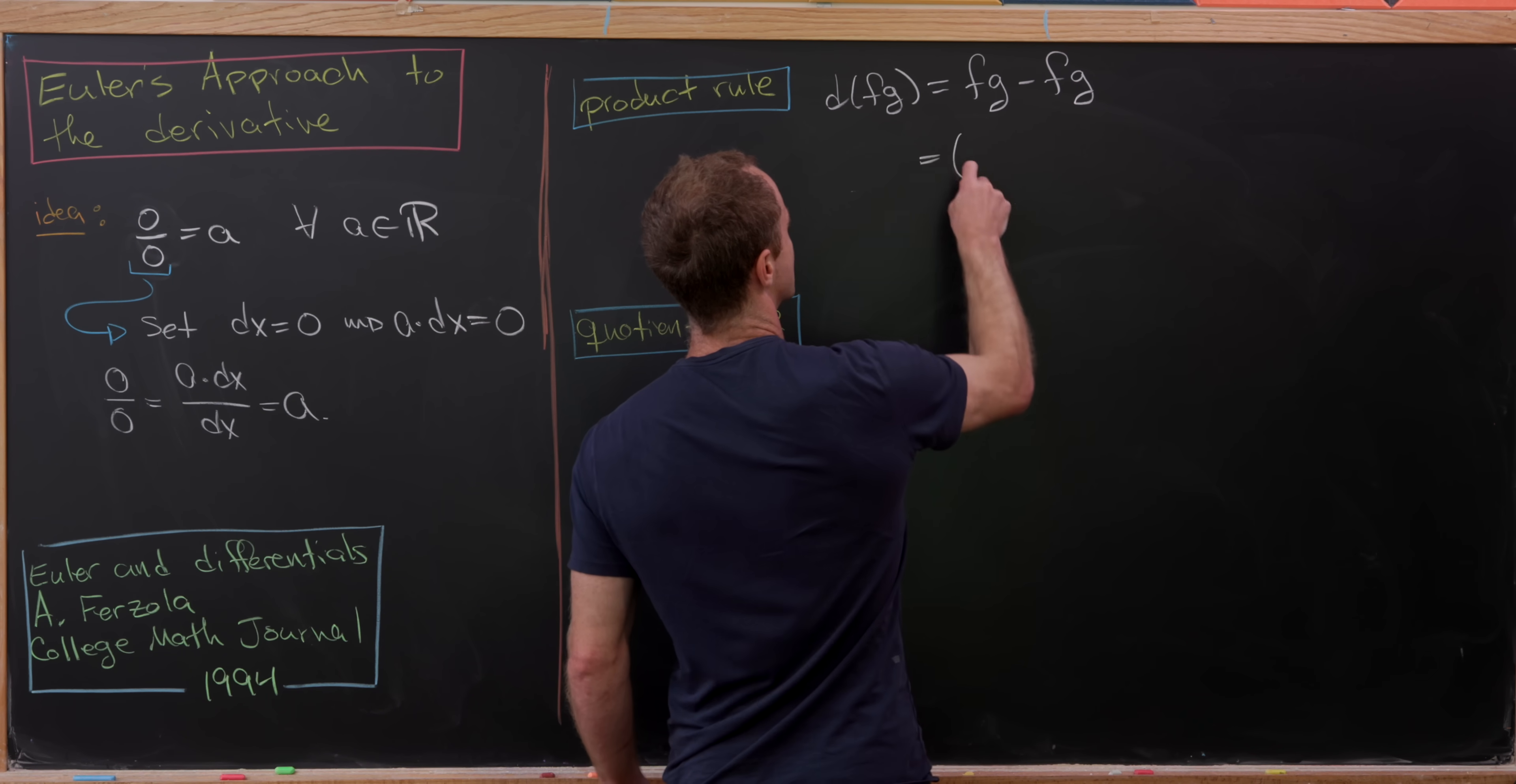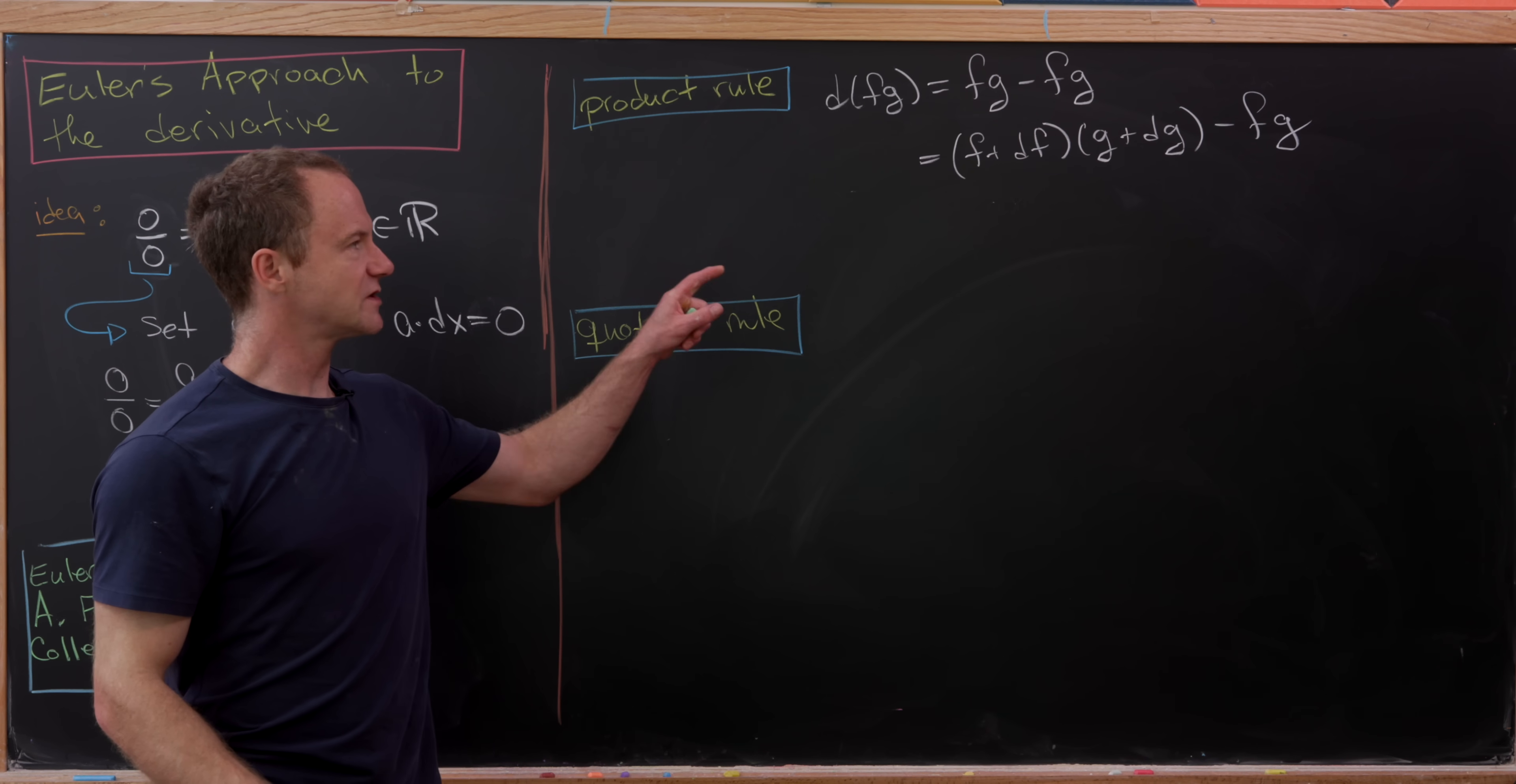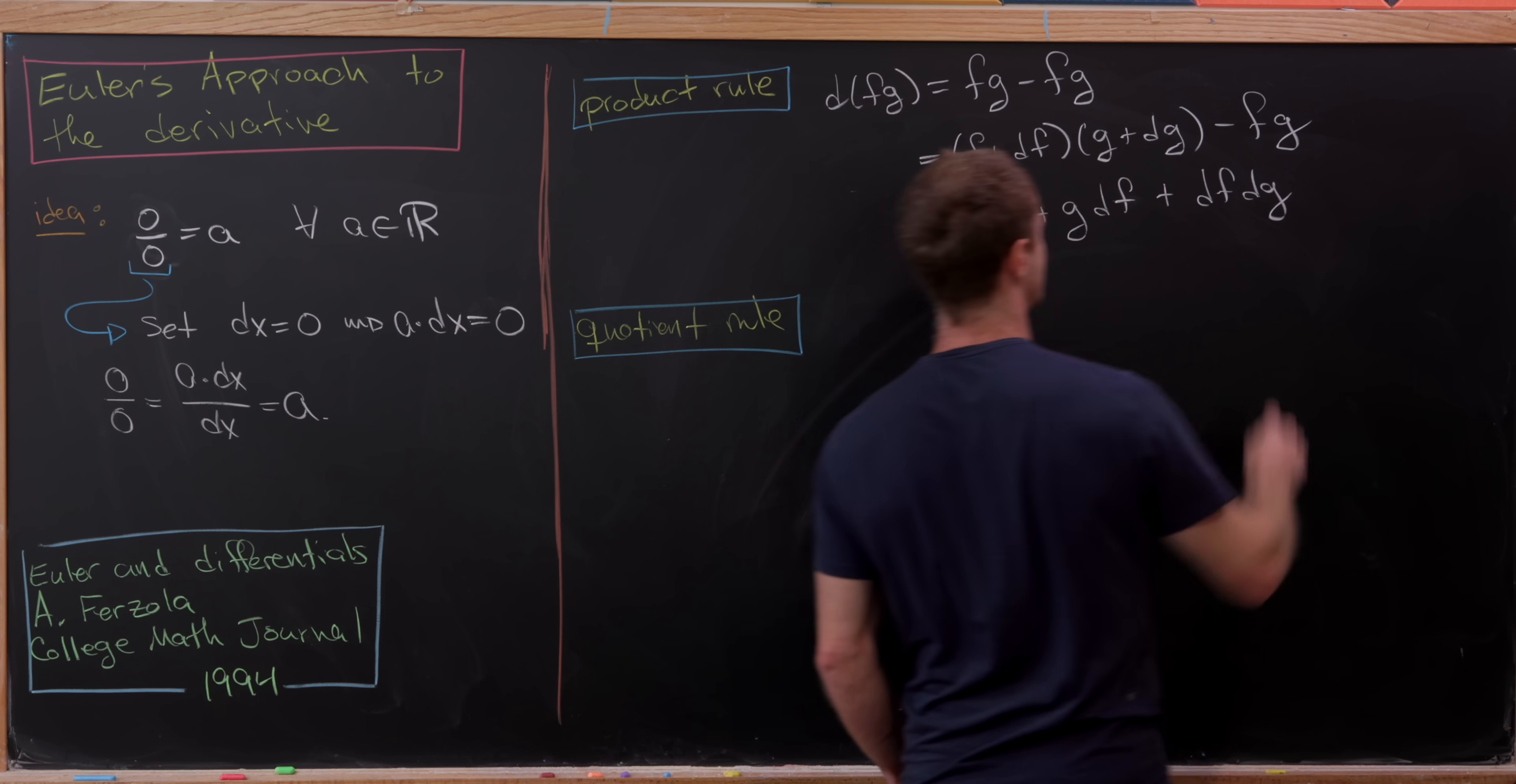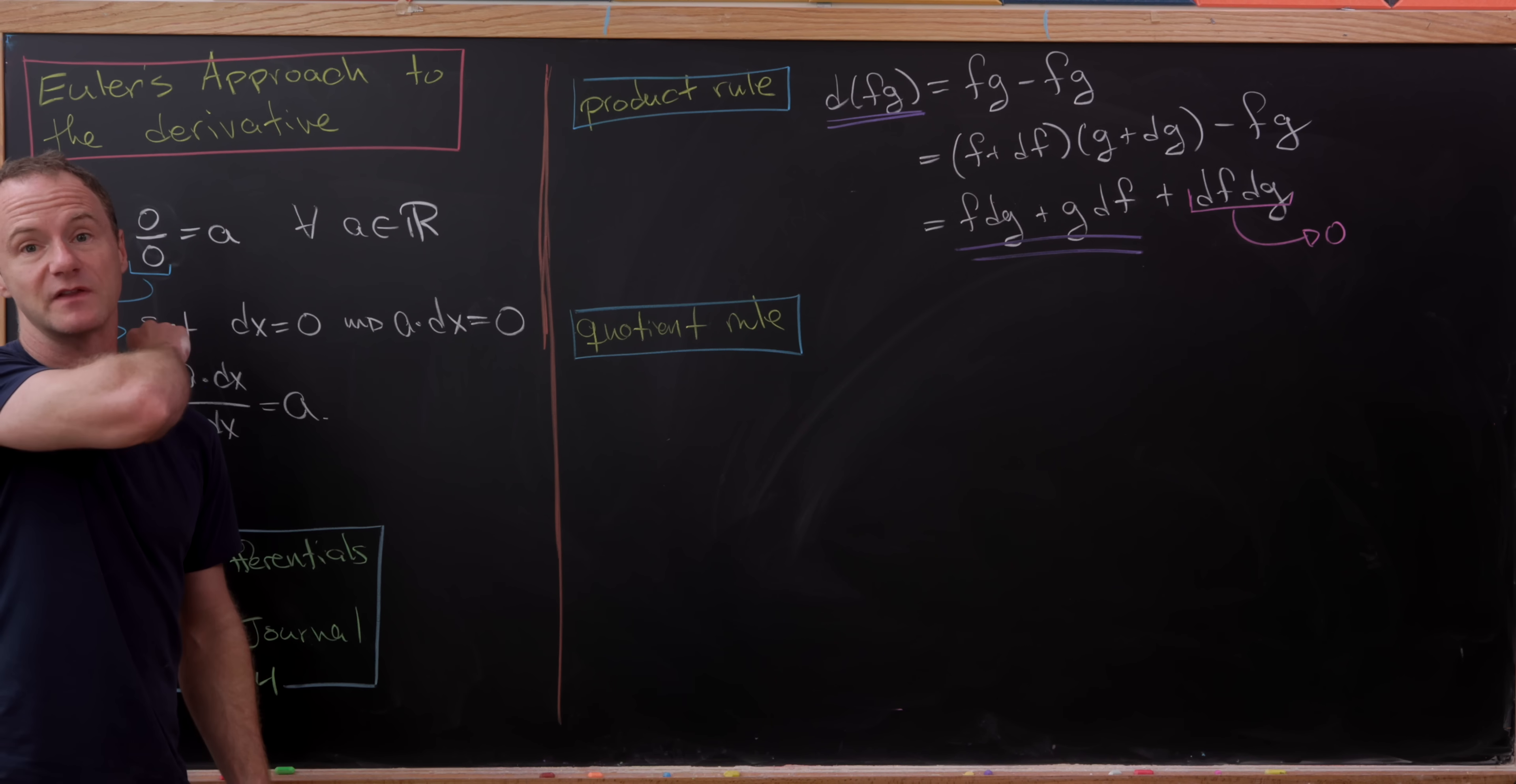But then we can include some more zeros in here and write this as F plus DF times G plus DG. So again, we're just adding zero to F and adding zero to G, but we're adding those new versions of zero. And then, of course, here we have to subtract F times G. But then if we multiply out those two binomials and then subtract the FG, we get FDG plus GDF plus DFDG. But notice that DFDG is a product of two things that are zero. So that's kind of like a smaller version of zero. So we would disregard that, leaving us with this D(FG) is equal to, well, exactly what it should be, keeping the product rule in mind.